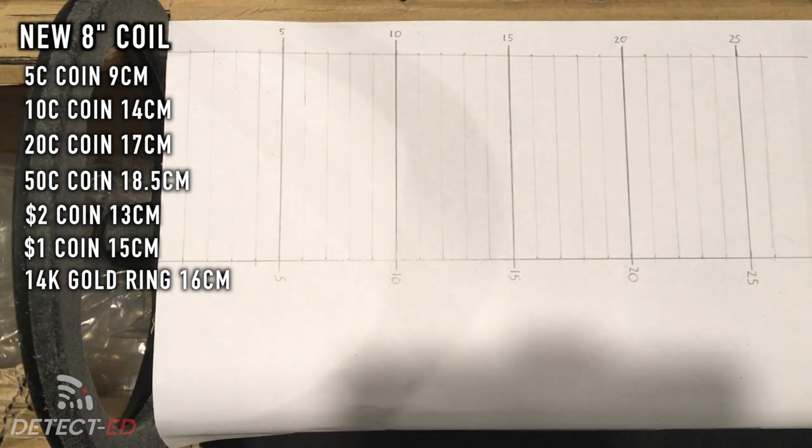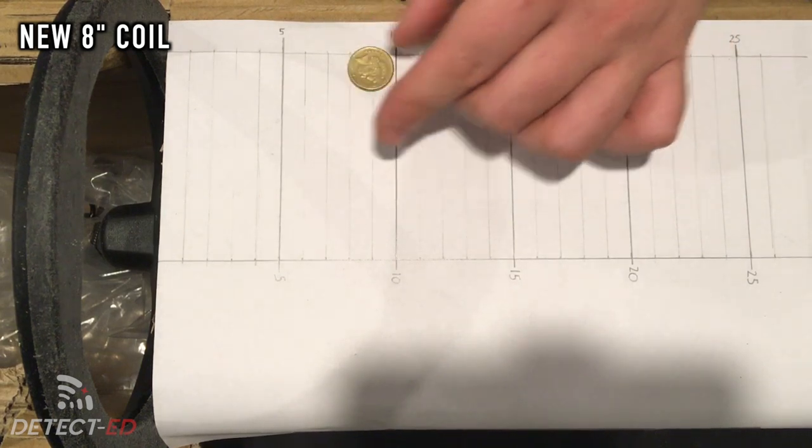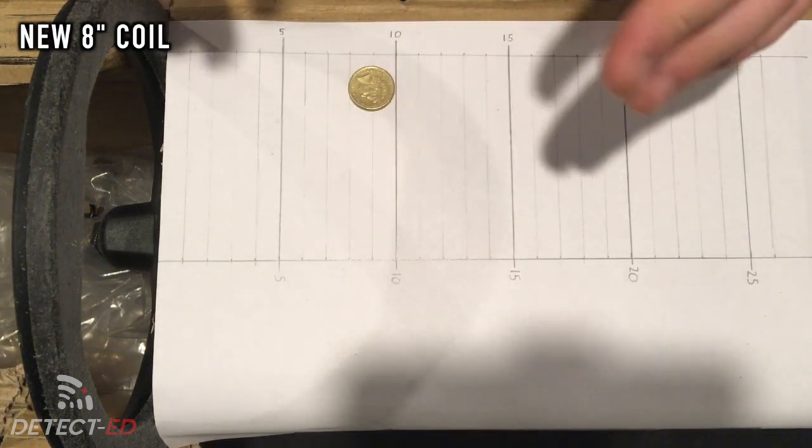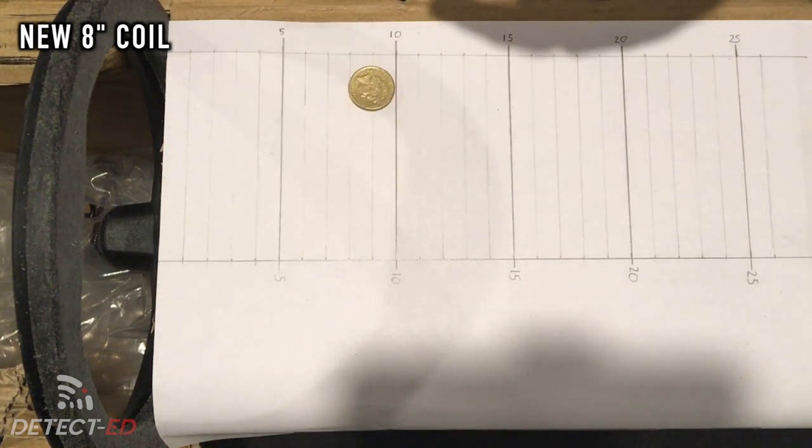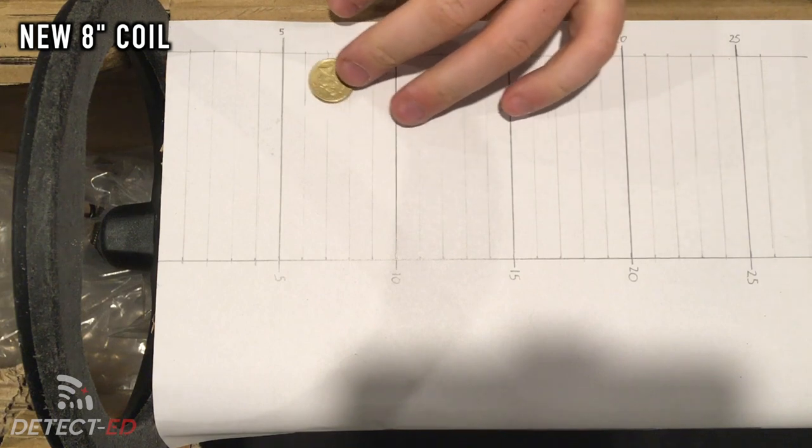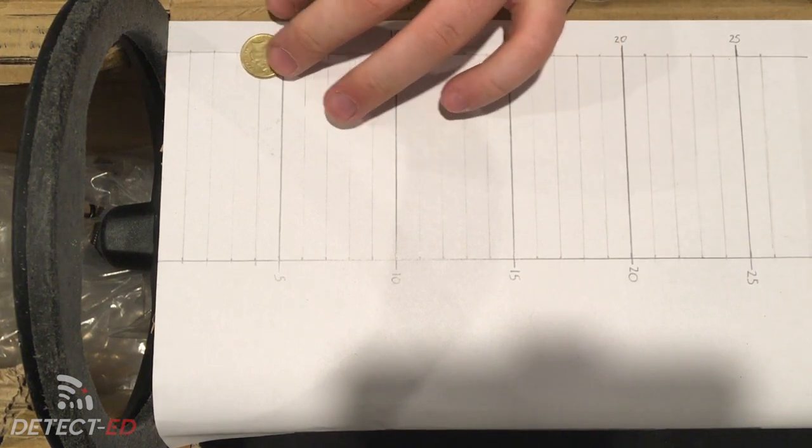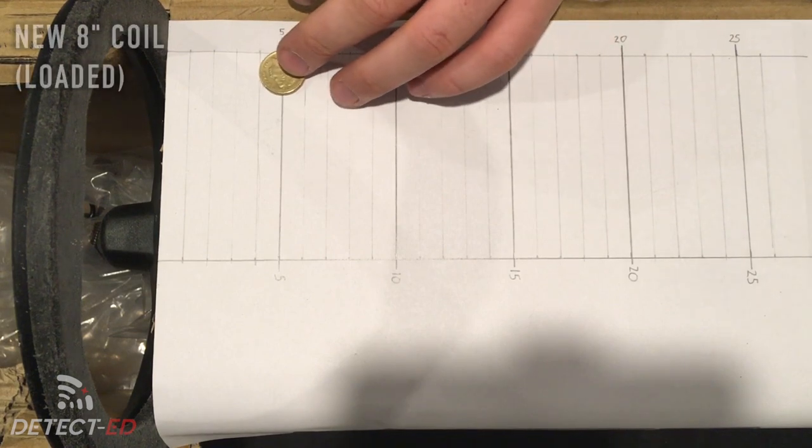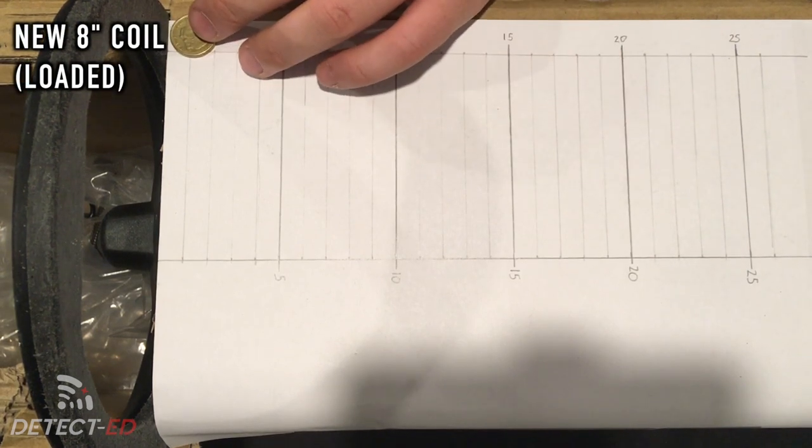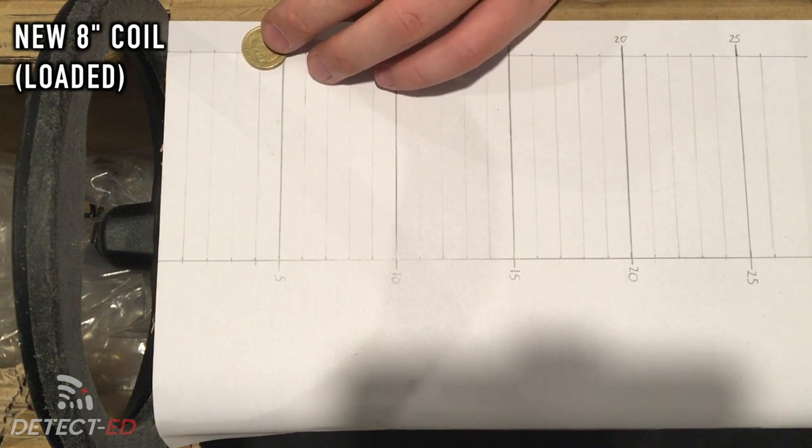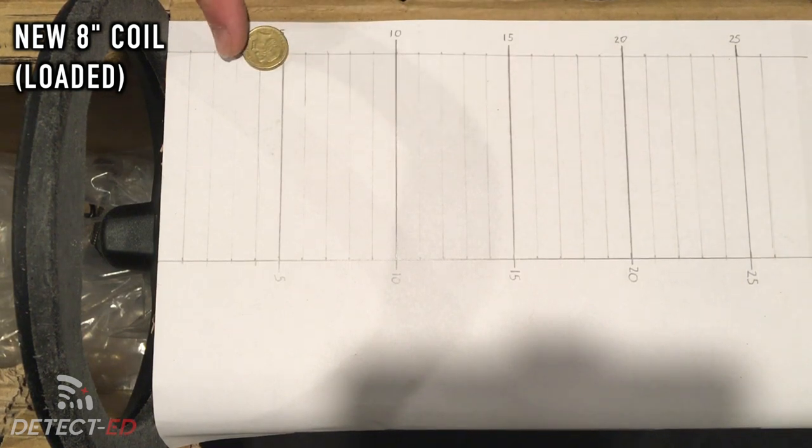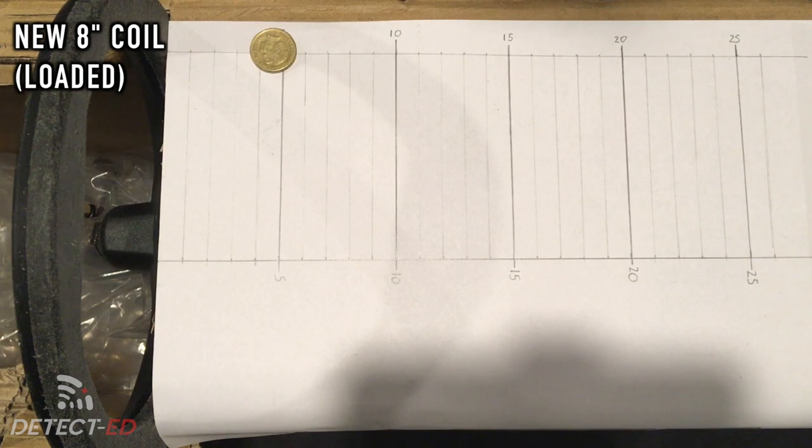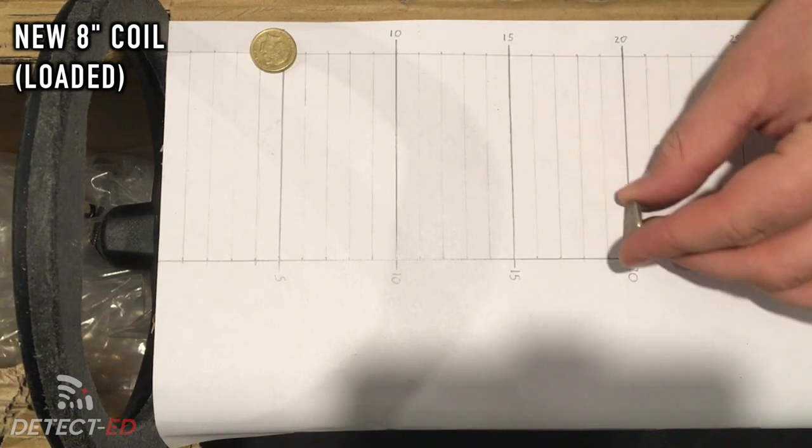Now I'll demonstrate what it's like when you're in salt water and you start to load the coil up. Salt water is conductive and basically starts to load the coil up, so we'll bring it to the point where it's just not falsing or not detecting the target. We're detecting it and now we're not detecting it.